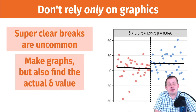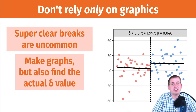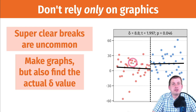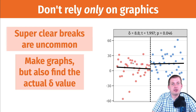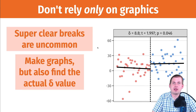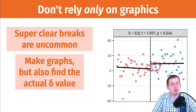In practice, it's actually pretty rare to see very clear, huge breaks in your outcome variable across your running variable. So use graphs — graphs are great, that's the whole point of doing regression discontinuity. You make pretty pictures, but don't only rely on the graphs. Find the actual delta value, that actual difference there, and measure how statistically significant it is. Do all of the summary statistics for it and everything else you can to see how robust that difference is. It might not be graphically apparent, but there really is a gap there.